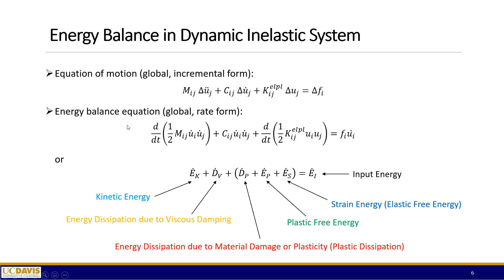From this energy balance equation we can identify each energy term. The first term is clearly the kinetic energy. The second term is related to viscous damping — the energy dissipation due to viscous damping in the system. The third term, which we call material work, can be separated into three sub-terms: energy dissipation due to material damage or plasticity (plastic dissipation), the plastic free energy, and the strain energy that we are all familiar with. These are the five energy terms we can calculate in our system.